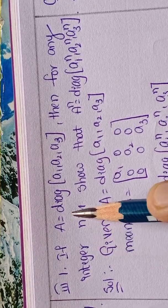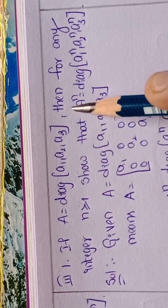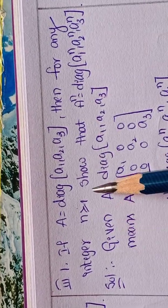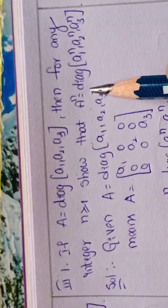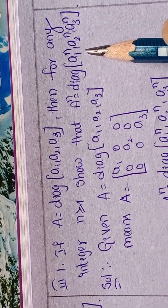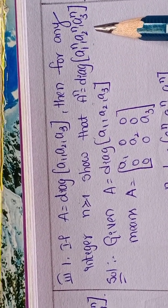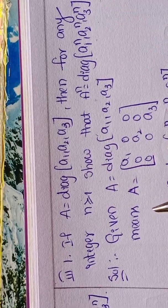If A equals diag of A1, A2, A3, then for any integer n greater than or equal to 1, show that A power n equals diag of A1 power n, A2 power n, A3 power n.